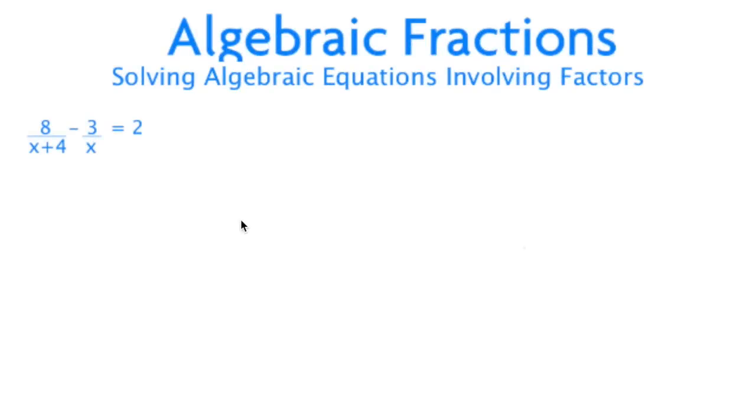Next, we may be asked to solve algebraic equations involving fractions. The question we have here asks us to solve 8/(x+4) - 3/x = 2. The first thing we need to do is place brackets around any denominators. This keeps things in order and helps for later on. Just for clarity, we can also place the number 1 as our denominator to our second half of the equation.